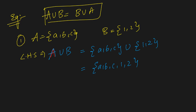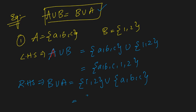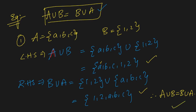Now the right-hand side is B union A. B is {1, 2} union with A which is {a, b, c}. Combining all elements gives us {1, 2, a, b, c}. Can I say these two sets are equal? Yes, because order does not play a key role in sets. Each and every element is present on both sides, so A union B equals B union A. This is the example for the first commutative law.